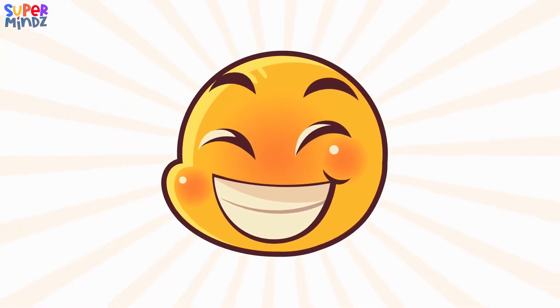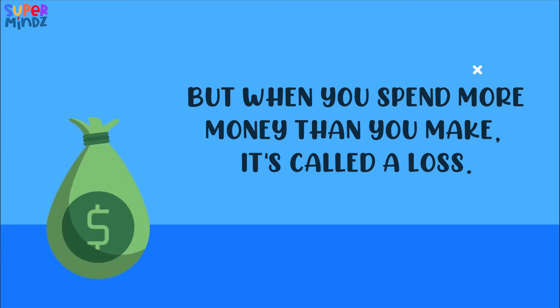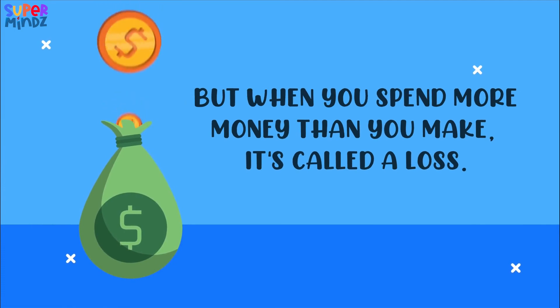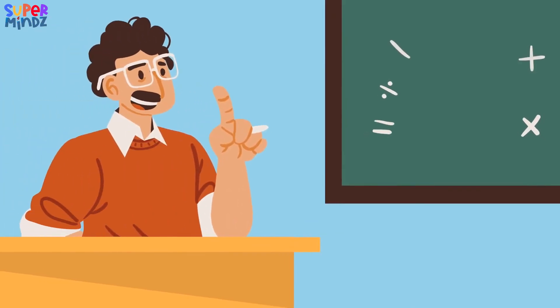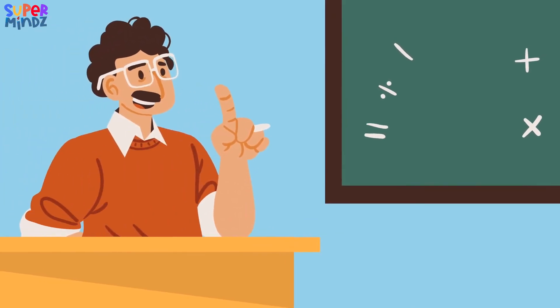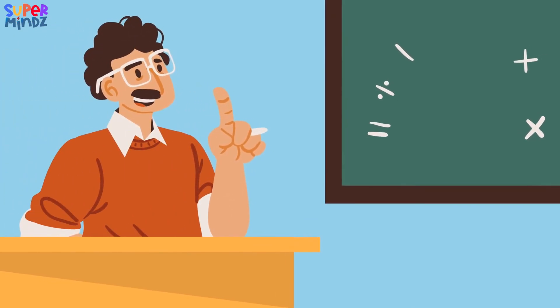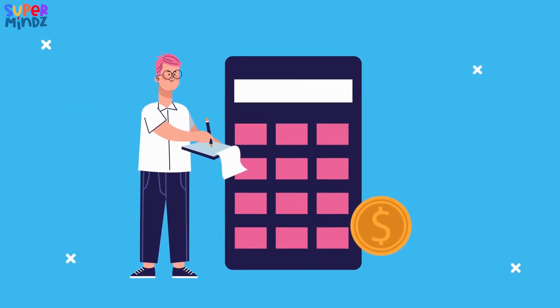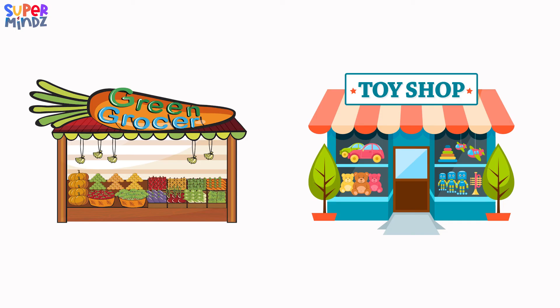So to sum it up: when you make more money than you spend, it's called a profit, and it brings a smile to your face. But when you spend more money than you make, it's called a loss. In the real world, businesses use profit and loss to see how well they're doing — they want to make sure they're making more money than they're spending, just like you do with your fruit stand or toy shop.